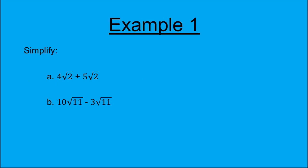Example 1. Simplify part A: 4√2 add 5√2. Part B: 10√11 subtract 3√11.